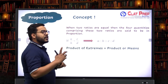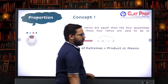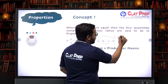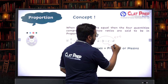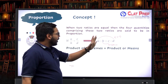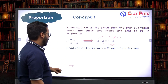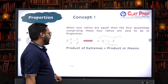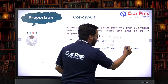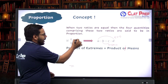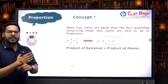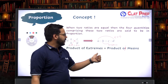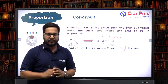What does 'product of extremes equals product of means' mean? Extremes are your corner terms and means are your middle terms. So a and d are your extremes and b and c are your means. When two ratios a/b = c/d are equal, we can cross-multiply and say that a·d is equal to b·c — that is the same thing as product of extremes equal to product of means.